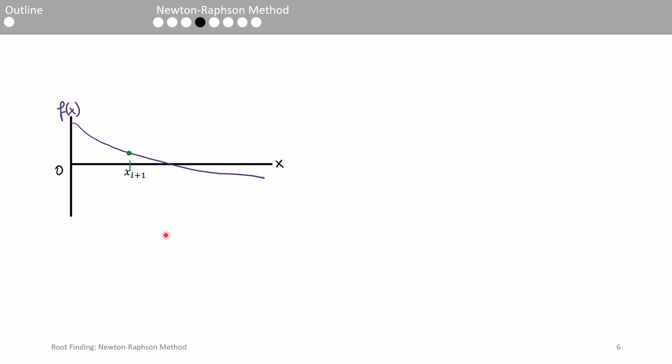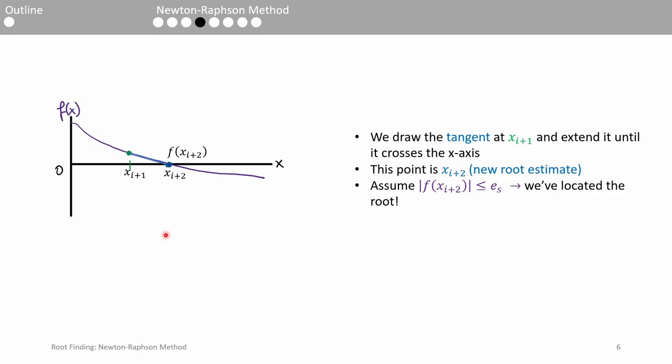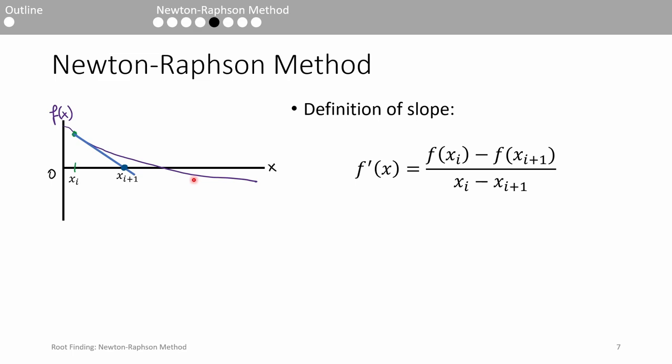We just found x, but we need to iterate again because it's unsatisfactory. We need to ride the tangent all the way down to the x-axis until we hit our next root estimate, x. We see that this new point is much closer to the actual root. Let's assume that this time we meet our stopping criterion so we can say that we found the root.